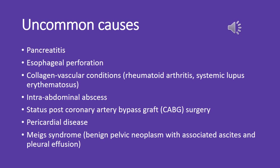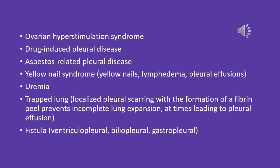Uncommon causes include pancreatitis, esophageal perforation, collagen vascular conditions such as rheumatoid arthritis and systemic lupus erythematosus, intra-abdominal abscess, status post-coronary artery bypass graft (CABG) surgery, pericardial disease, Meig's syndrome — benign pelvic neoplasm with associated ascites and pleural effusion — ovarian hyperstimulation syndrome, drug-induced pleural disease, asbestos-related pleural disease, and yellow nail syndrome.